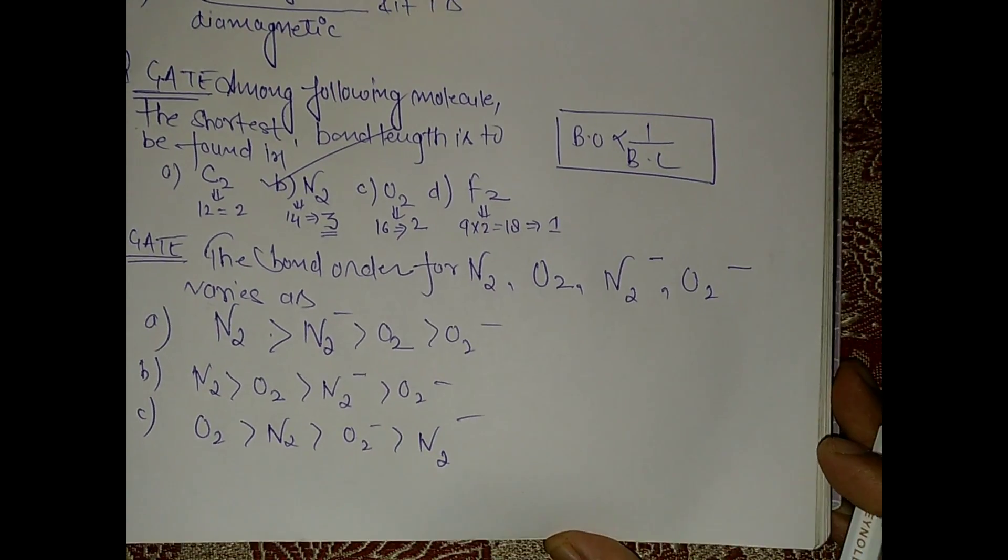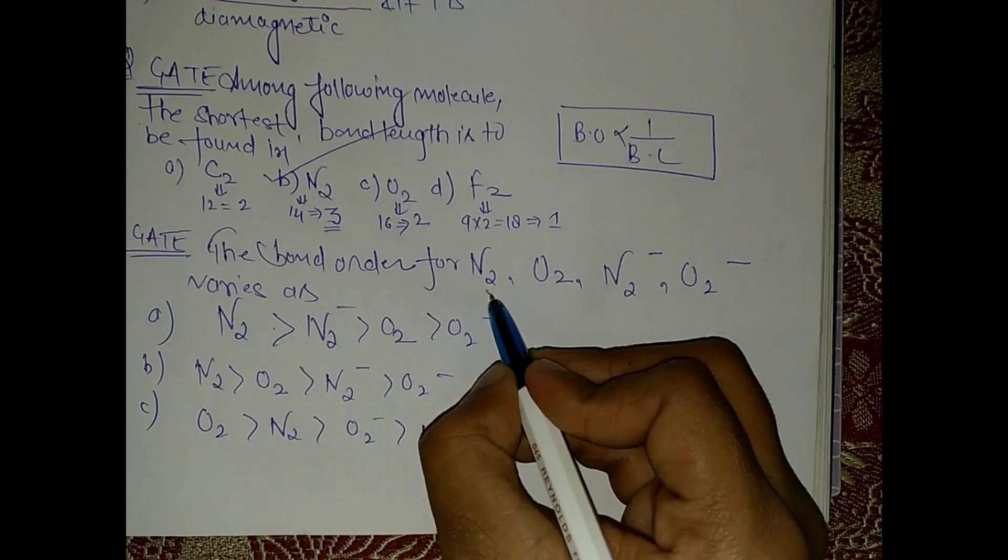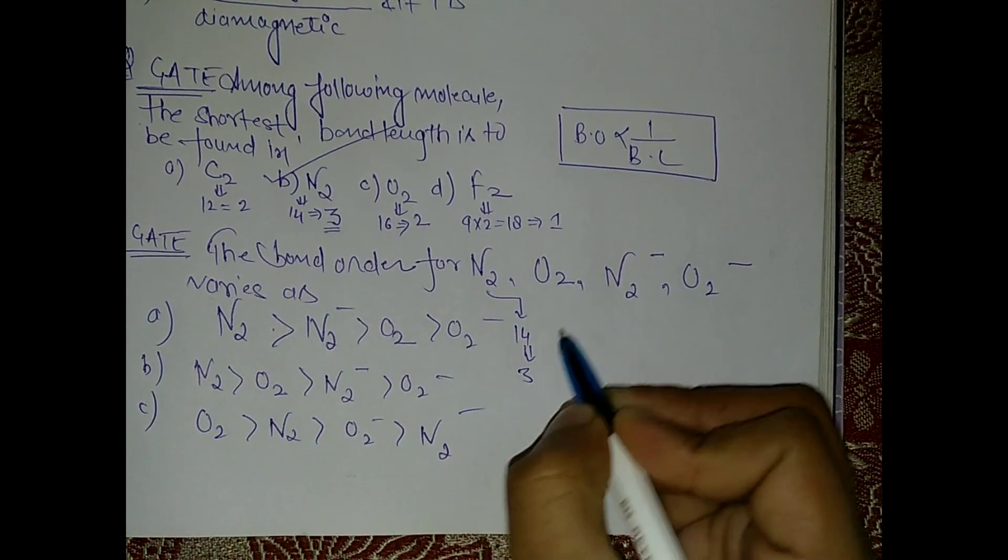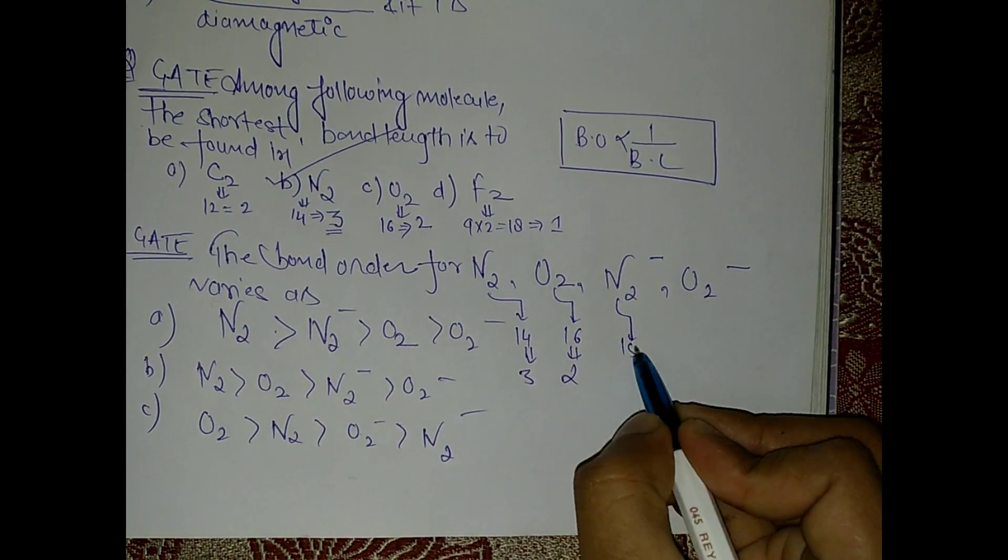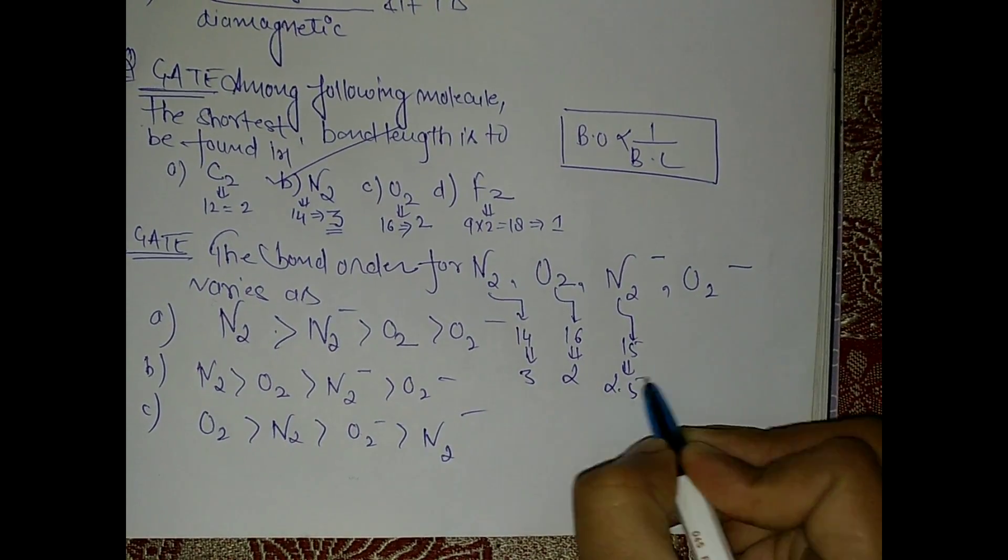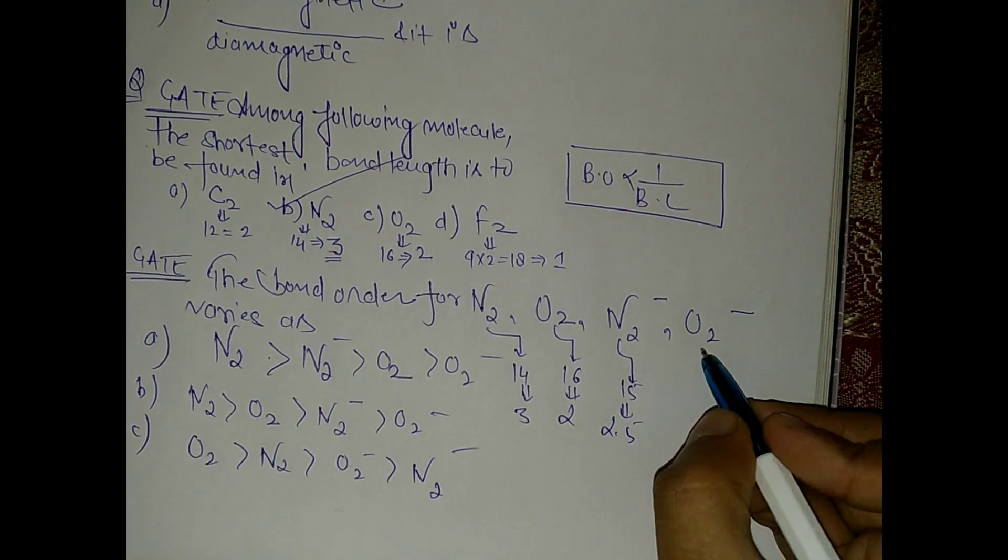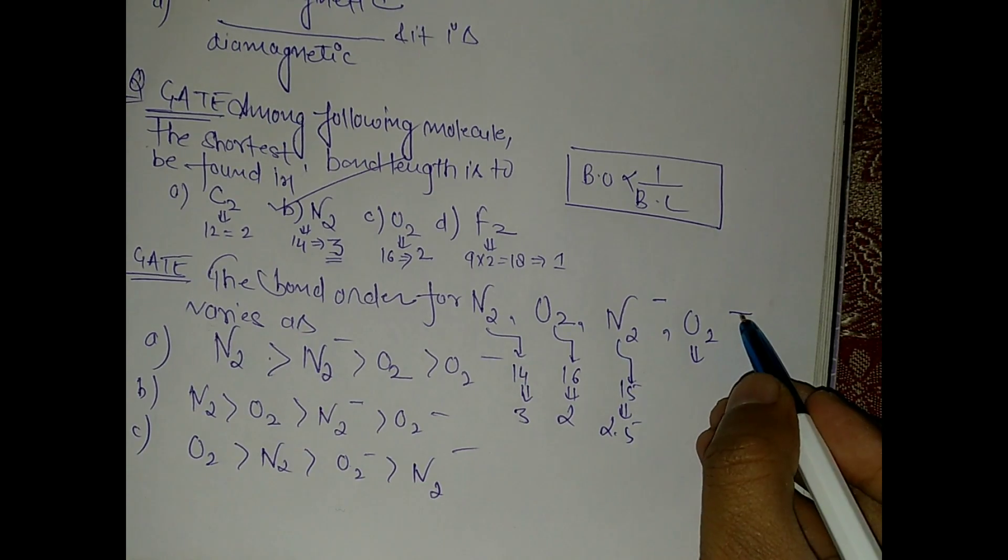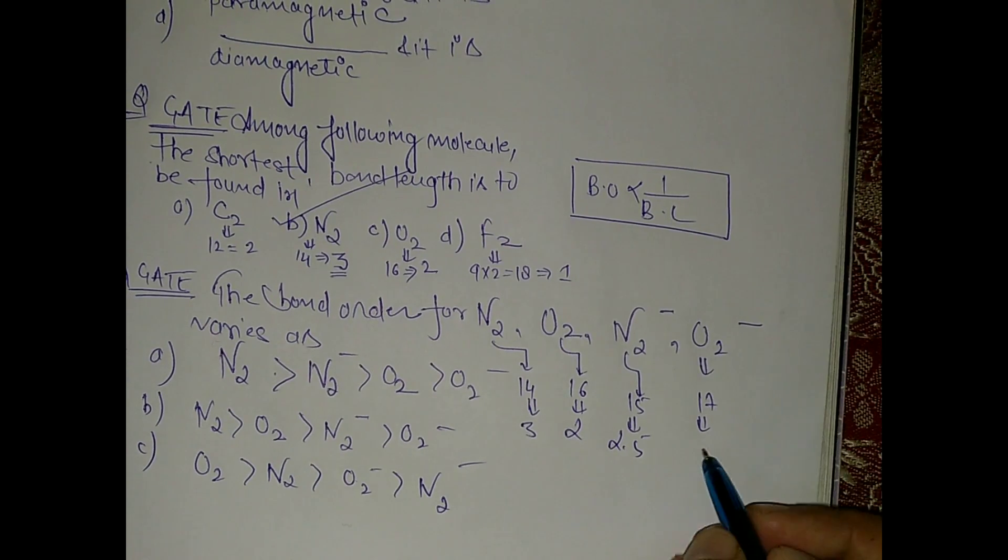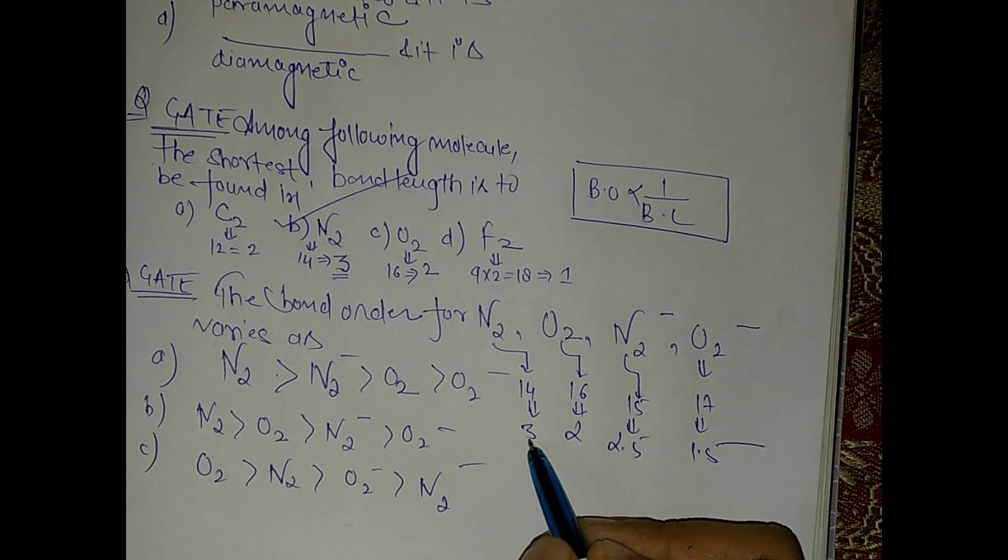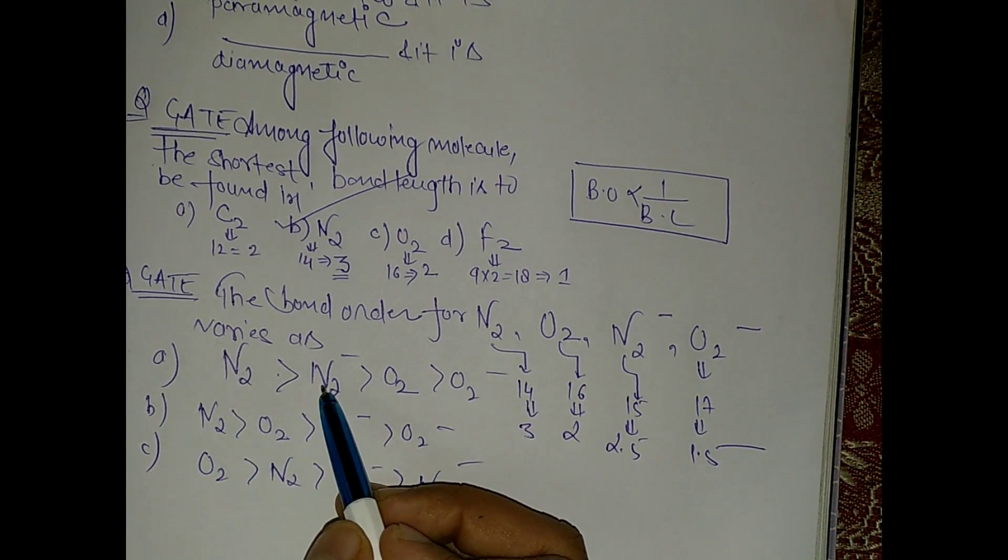Now come to the last question. We have to arrange the bond order. So again, this is 14, so this is 3. This is O2, this is 16, that means it is 2. And N2 negative, it is 15, that means 2.5. And O2 negative, this is 16 plus 1 is 17, and 17 is 1.5. So this is 1.5. So the highest bond order is in N2, then followed by N2 negative, then O2, and last is O2 negative 1.5. So first is the right answer.